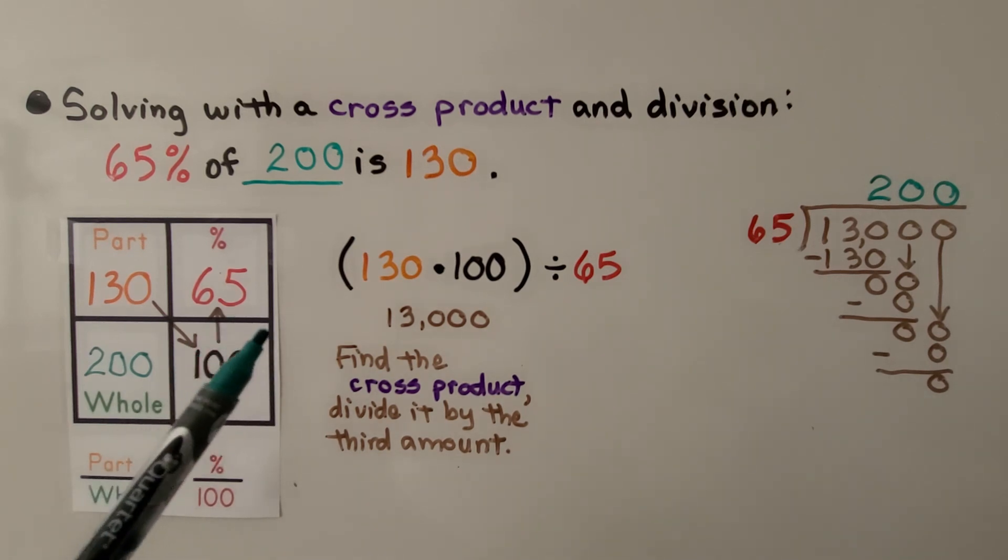Our ratio is 130 over 200 is equal to 65 hundredths. If you missed when I did this in the previous lesson, just check the description because there will be a link in there.